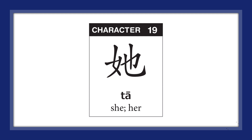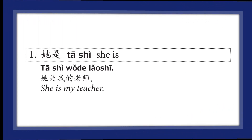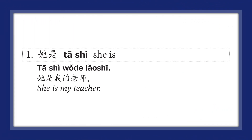Chinese for the day: the character 她. 她 means she or her. 她是 means she is. 她是我的老师 — She is my teacher.